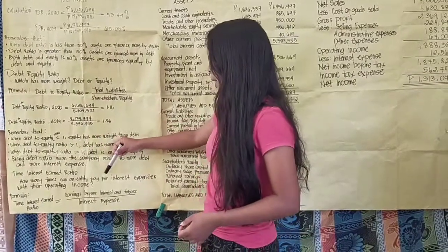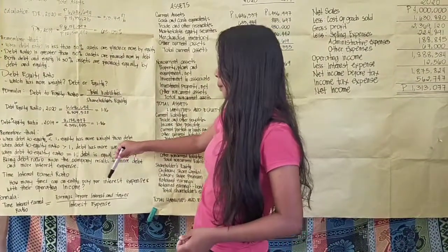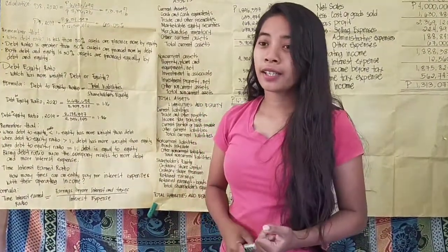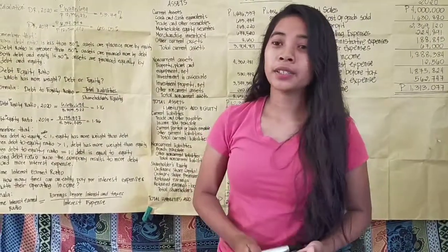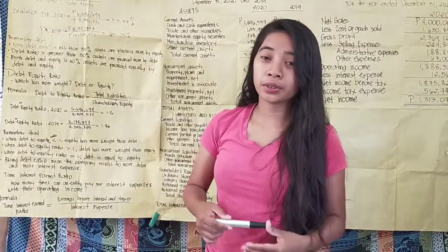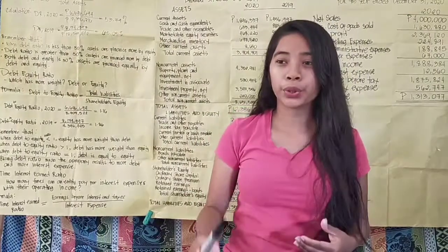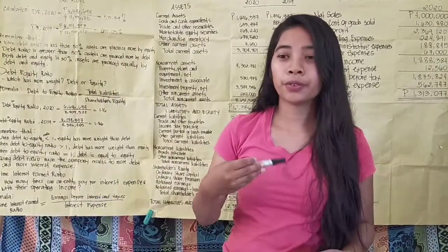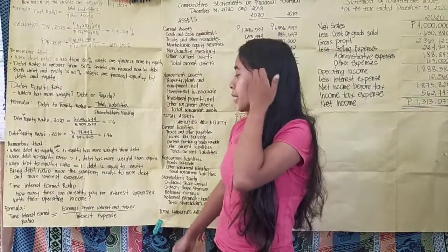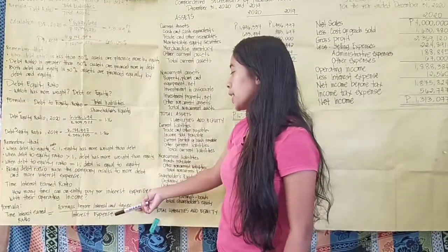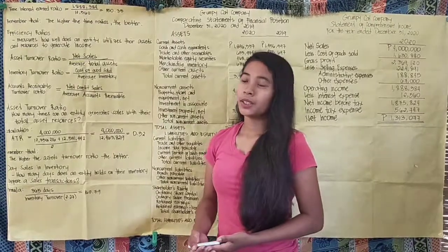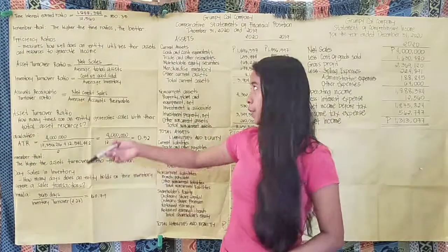Times interest earned ratio answers: how many times can an entity pay for their interest expenses with their operating income? We want to know how many times the company earned income to cover interest payments. The formula is earnings before interest and taxes over interest expense.